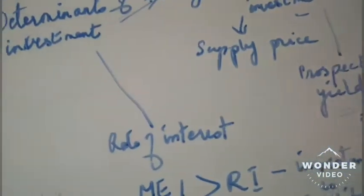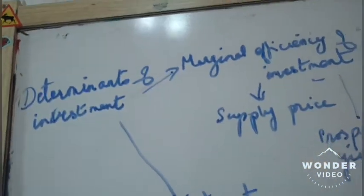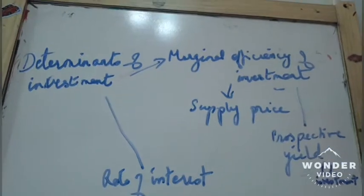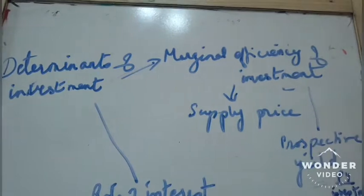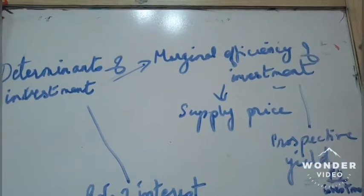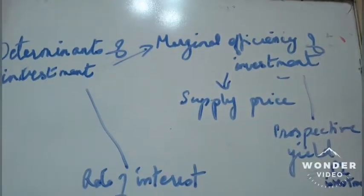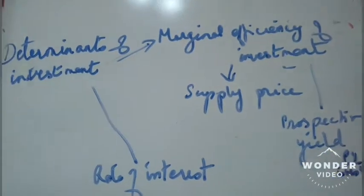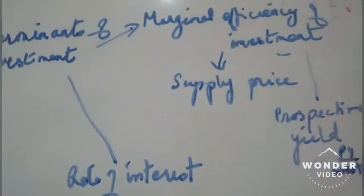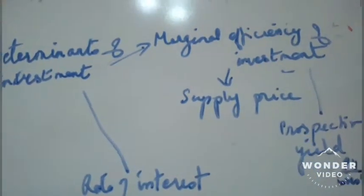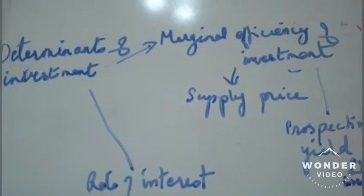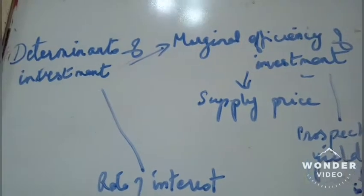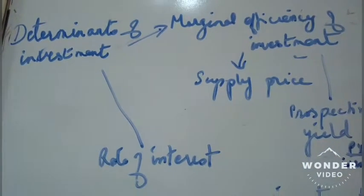There are two factors on which the determinants of investment depend. The first factor is marginal efficiency of investment. Marginal efficiency of investment involves supply price and prospective yield — how much you are paying for the investment and the return on investment. Supply price is the price of machinery you pay when making an investment, for example buying a new machine for 10,000 rupees.